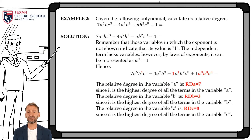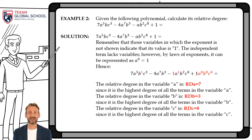In this second example, we also highlight the variables with exponent 1 and use the same law of exponents to highlight the variables of the independent term, which will not affect the value of the relative degree. Then, we can see that the relative degree in the variable a is 7, since it is the highest degree of all the terms. The relative degree in variable b is 3, and the relative degree in variable c is 8.